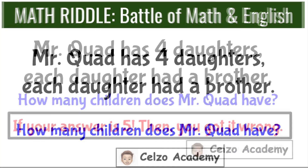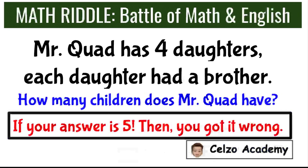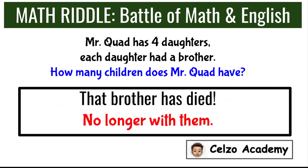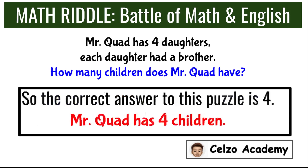If your answer is 5, then you got it wrong. Please read the puzzle again. It said each daughter had a brother, not has. This means that brother has died — he's no longer with them.